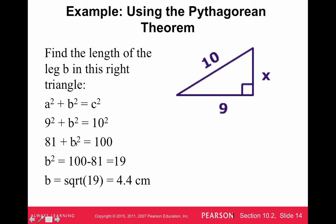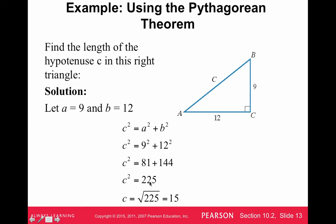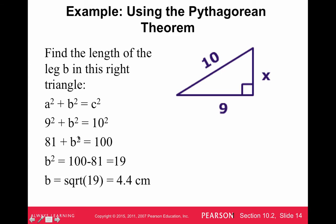So now I have 81 plus b squared equals 100. Notice in the last one how I just added them up and did the square root, but this time I don't know one of the legs, so I'm actually going to have to subtract the 81 from 100 first, and then take the square root at the end. So the square root of 19 is about 4.4 centimeters.